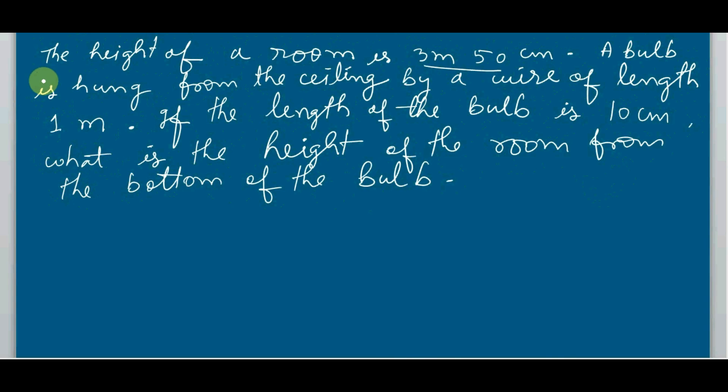A bulb is hung from the ceiling by a wire of length 1 meter. If the length of the bulb is 10 centimeters, so what is the height of the room from the bottom of the bulb?